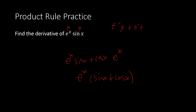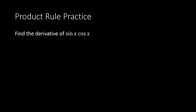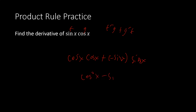Now we're going to find the derivative of sin(x)·cos(x). Here f is sin(x) and g is cos(x), so we apply f'g + fg'. f' is cos(x), g is cos(x), giving cos²(x). Then g' is −sin(x) and f is sin(x), giving −sin²(x). Our answer is cos²(x) − sin²(x), or equivalently cos(2x).